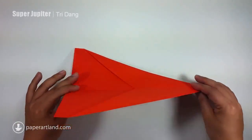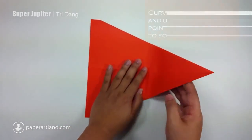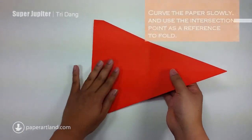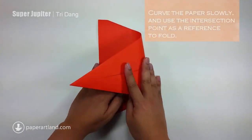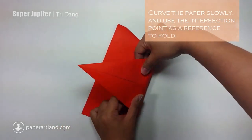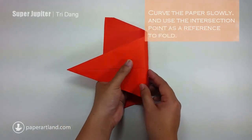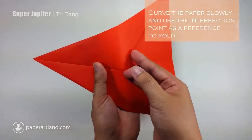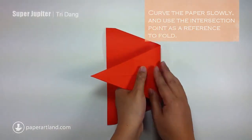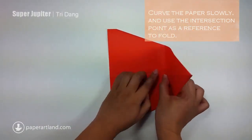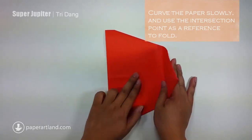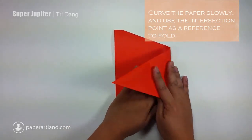Next, I turn the paper over. And I will fold it down. When I fold down, I will curve the paper first. And then I see the intersection of this edge and this edge right here. I will fold it down and use this edge and make a frame to fold.